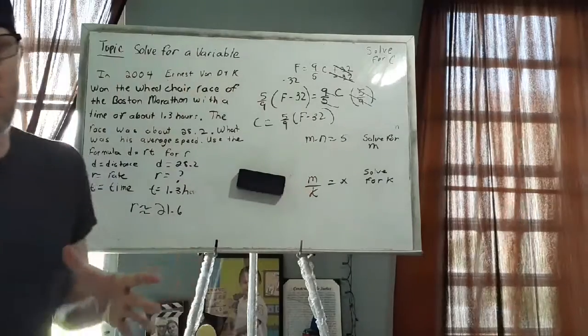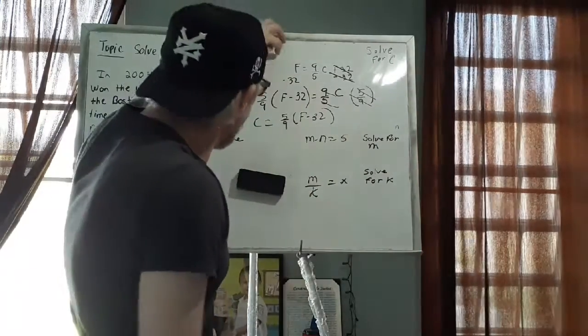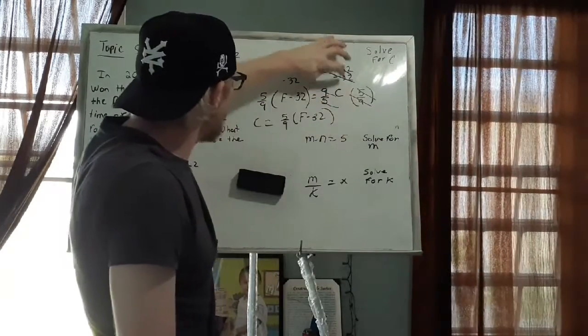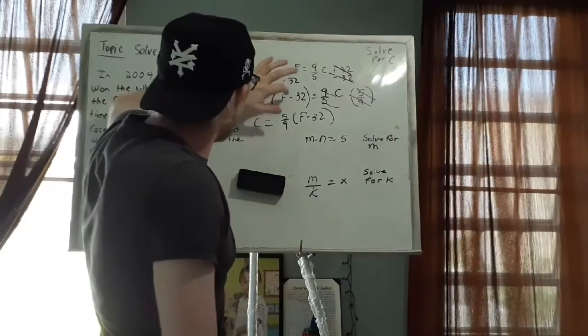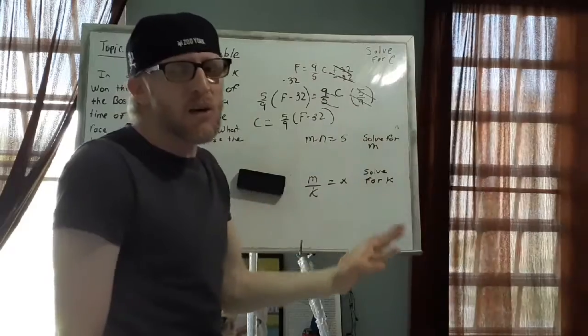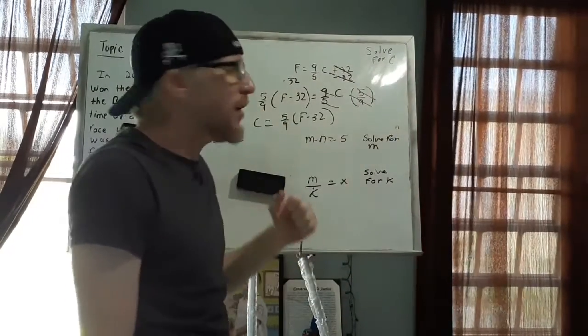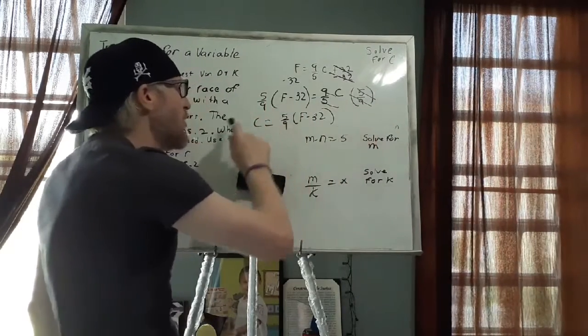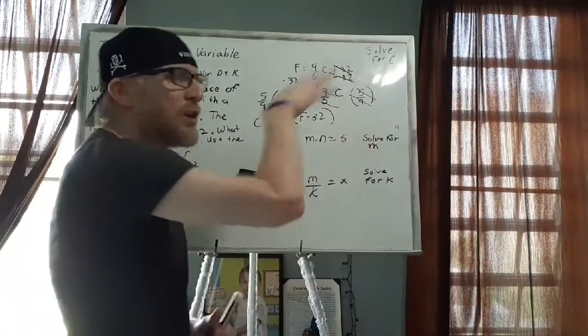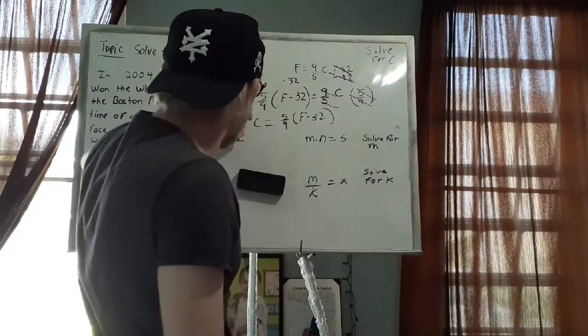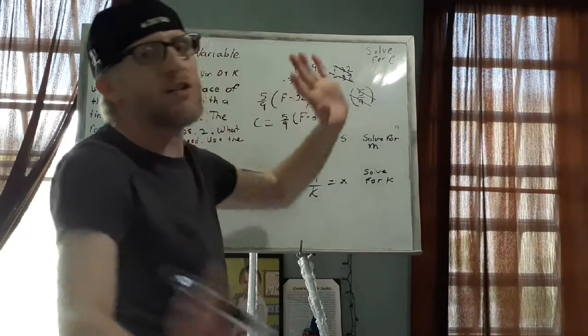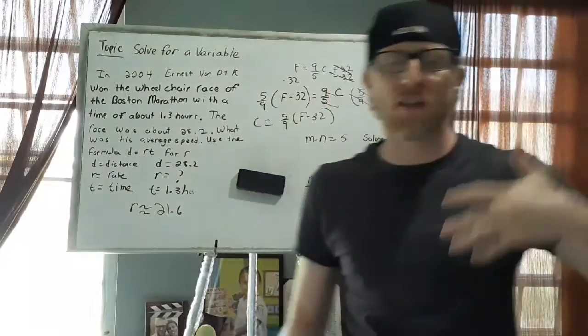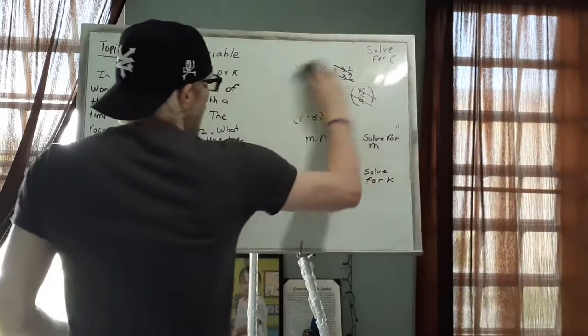So 5 over 9 times F minus 32. And that's all I need to do. I'm not asked to find the value of C. I'm not asked to do anything else. I just want to know what the formula would look like. So again, my formula was F equals 9 over 5 C plus 32. If I want to solve for C, I just subtract 32, which is what I did here, and this canceled out. And then that leaves me with F minus 32 equals 9 over 5 C. I need to get rid of the 9 over 5. I flip it upside down and turn it into 5 over 9. And this all cancels out. And then I multiply. So my answer is just C equals 5 over 9 times F minus 32. And that's it.